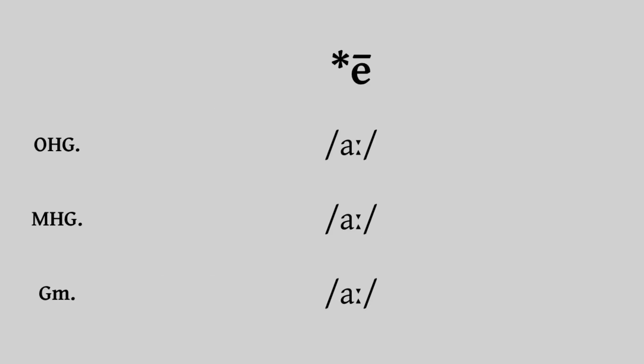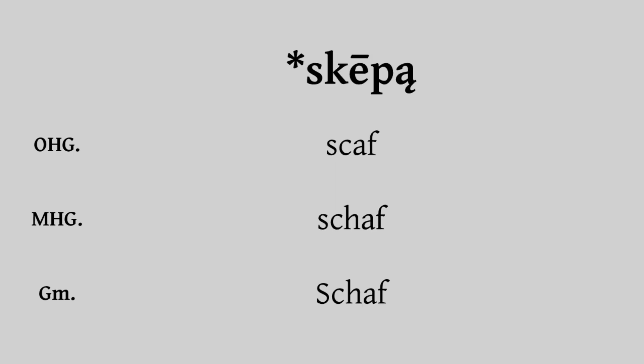As mentioned, the long Ē is lowered to A in West Germanic languages, and in German it simply merged with other sources of the long A and did not change from there. In writing, German doesn't distinguish between the short and long A's, so it just represents this as A.